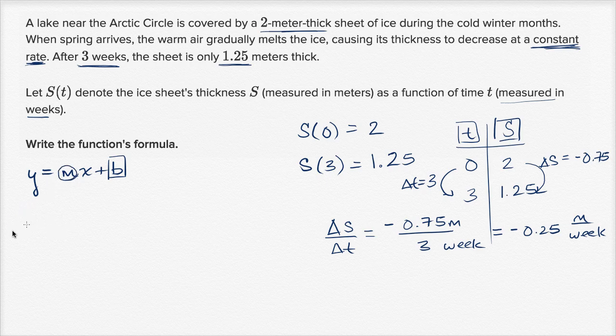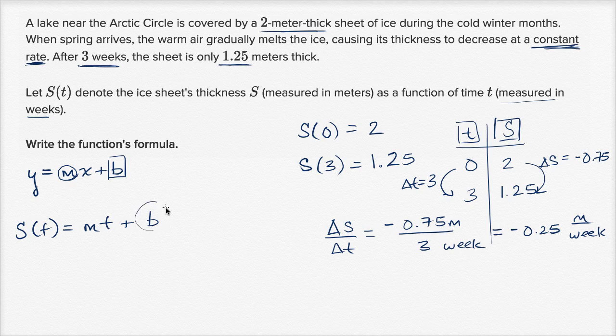So in this case, we're going to have, we don't have y and x, we're going to have S and t. We have S as a function of time, and it's going to be equal to the rate of change times time, plus where we started, plus b. Now, what is b going to be?